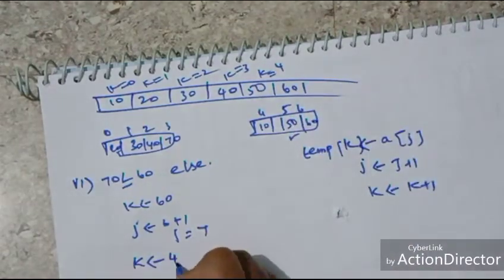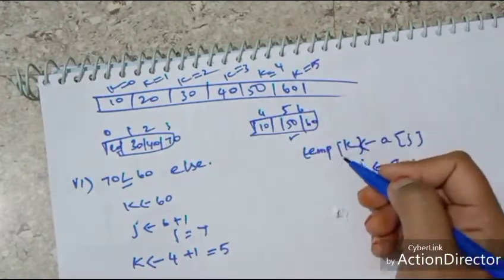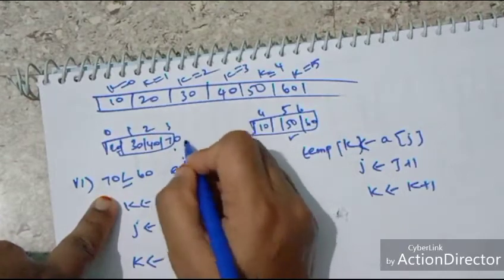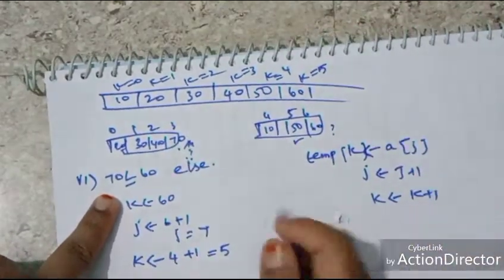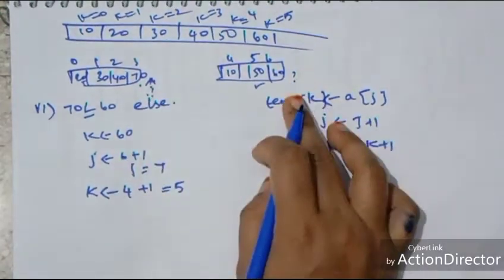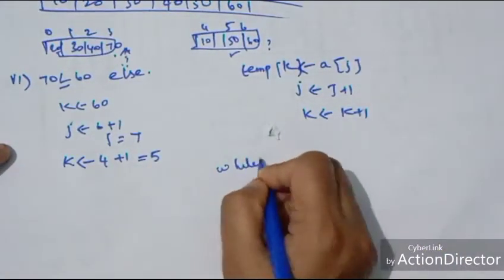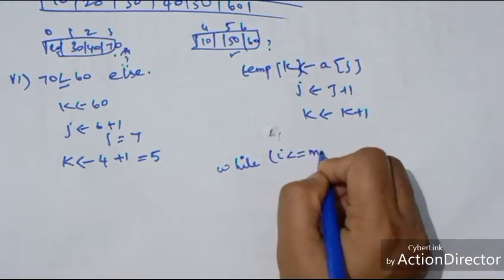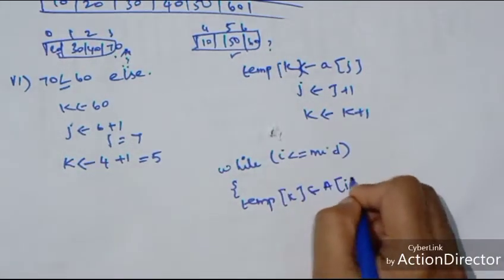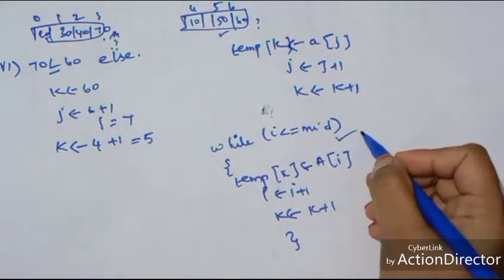The J value is 6, so J equals 6 plus 1 equals 7, and K equals 4 plus 1 equals 5. We fill 60 at K=5. Next, 70 is the remaining element. Since J is greater than any other number and there is no number left in the right array, the while part of the algorithm is executed: while I is lesser than or equal to mid value, K equals A of I, I equals I plus 1, K equals K plus 1.